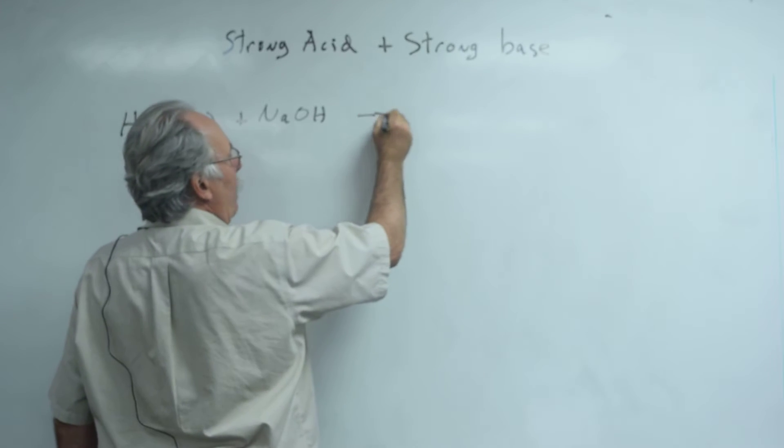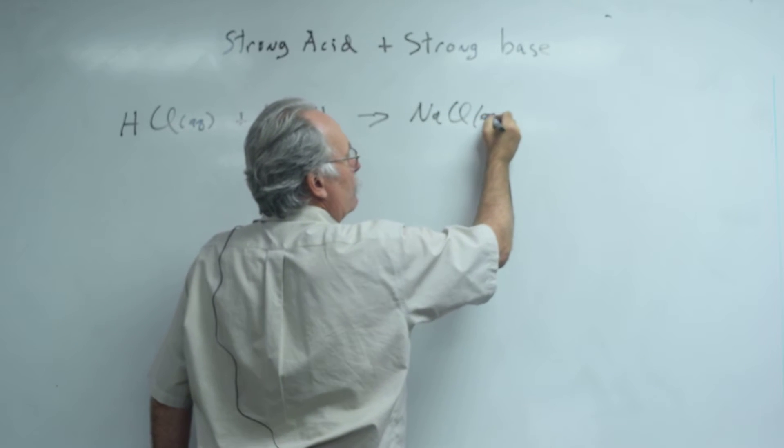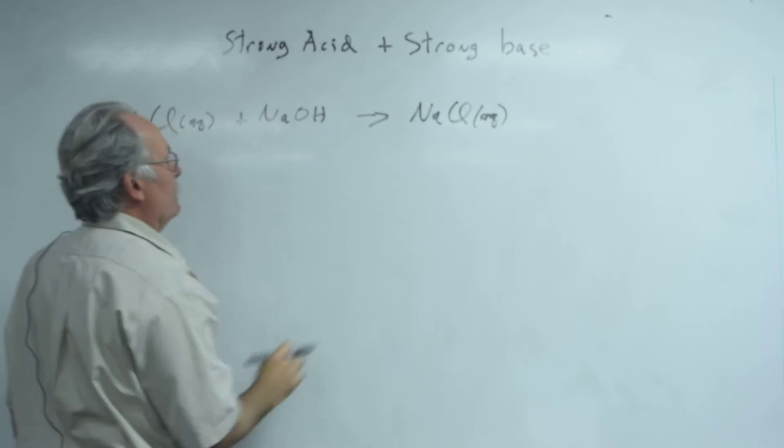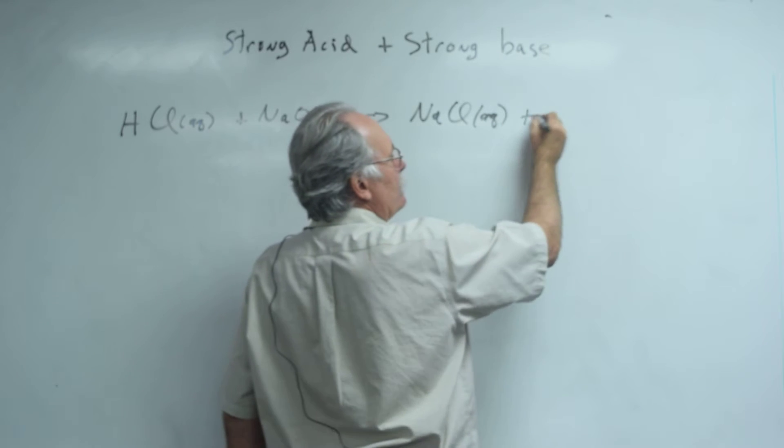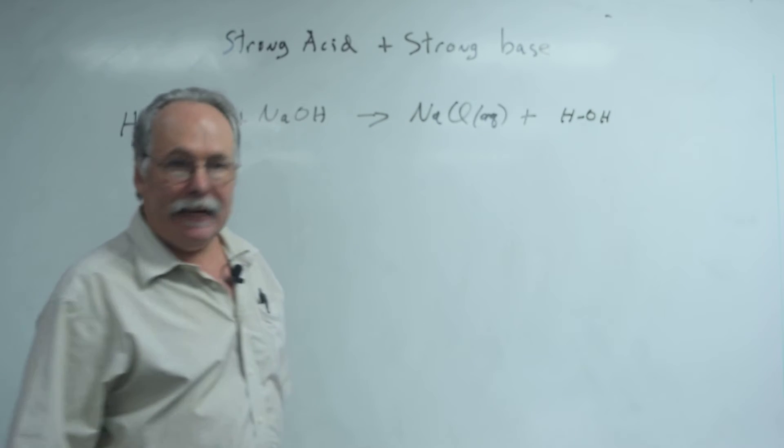And so the products would be NaCl, and I go to my solubility rules, and all salts of chlorine are aqueous. I'm going to write this as HOH, but in a minute I'm going to change that to H2O.